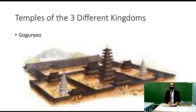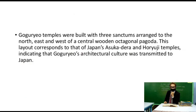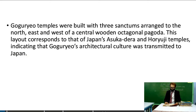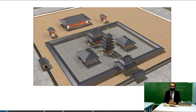Examples of temples of the three different kingdoms in Korea. Goguryeo temples were built within three sanctums arranged to the north, east, west, and a central wooden octagonal pagoda. This layout corresponds to that of Japan's Asuka-dera and Horyuji temples, indicating that Goguryeo's architectural culture was transmitted to Japan. The layout of the Goguryeo palace is somewhat recognizable with Japanese architecture.